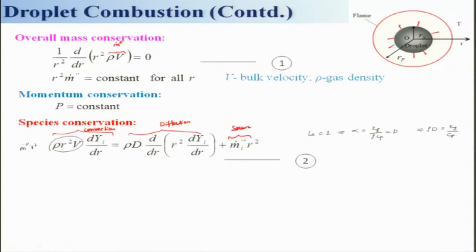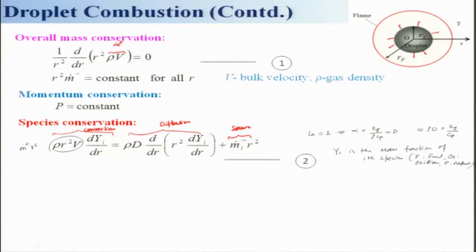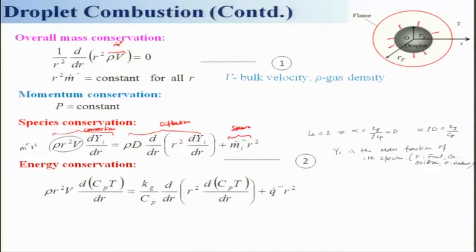Y_i is the mass fraction of the i-th species: it can be fuel (F), oxidizer (Ox), or product (P). Now let us look at the energy equation, which has a similar structure: a convection term, a conduction term, and a source term representing the heat release from chemical reaction.